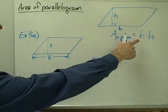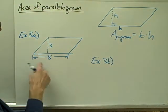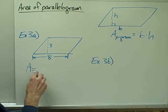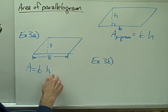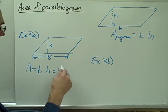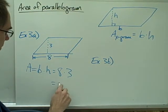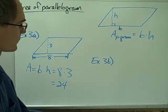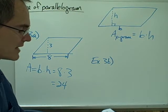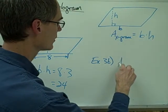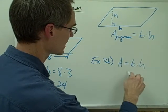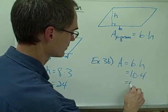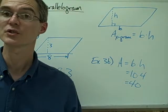In example 3A, using this formula is fairly easy if we are given the length of the base and the height. The area of this parallelogram is base times height: our base is 8, our height is 3, so our area is going to be 24 square units. Example 3B: the base of our parallelogram is 10 and our height is 4, so again our area is base times height — 10 times 4 — and we've got an area of 40 square units.